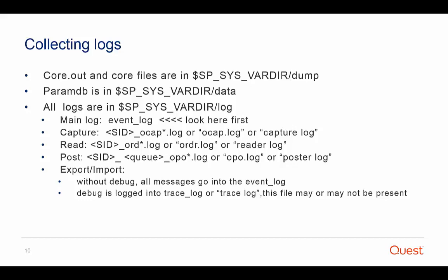Let's take a look at which logs to collect. For core dump issues, look for core.out and core files in the Vardir dump directory. The paramdb file, which contains all of your custom parameter settings, is located in the Vardir data directory. All logs are located in the Vardir log directory. The main log is named event log — this is the first log you should review. Each process has its own log, but we do not recommend reading the process-specific logs unless there is an error in the event log. These logs often contain debug messages that may cause you to think there is a problem when there is none.